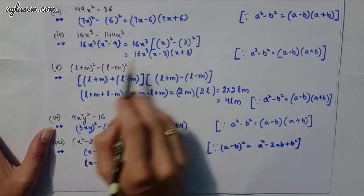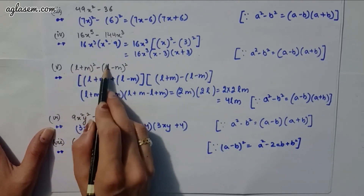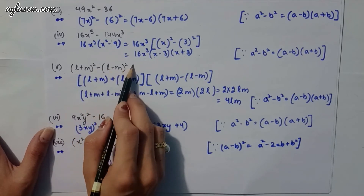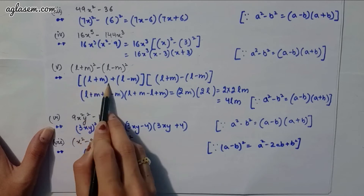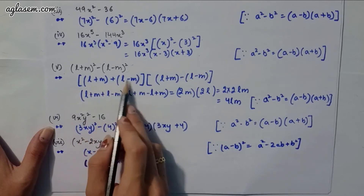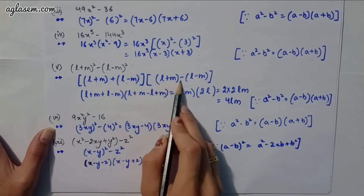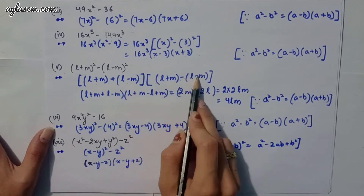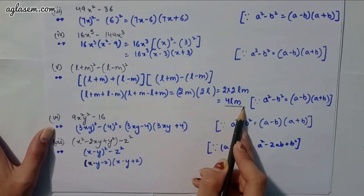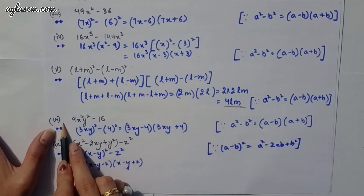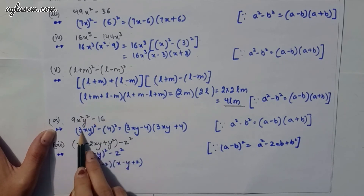Fifth part: (l + m)² − (l − m)². Using a² − b² = (a − b)(a + b), we get [(l + m) + (l − m)]·[(l + m) − (l − m)] = 2l · 2m = 4lm.